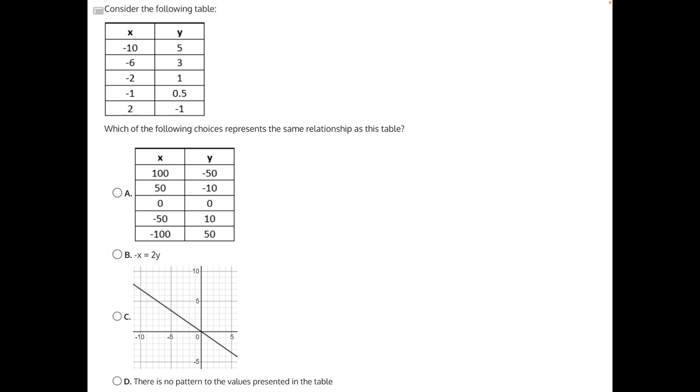Let's start with C. For answer choice C, I'm going to try this first point here, over negative 10, up 5. The point should be right here, however that does not fall on the graph, so we can eliminate answer choice C.